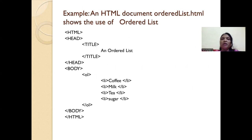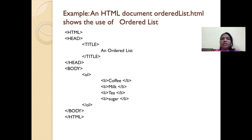Here is one sample. I have taken a list of items — coffee, milk, tea, and sugar — four items which I have to display as a list. I am going to use ordered list. In this case, by default, it will take the numbering as 1, 2, 3. Whenever you want to create a list, you have to give the ordered list tag inside the body tag. This is the structure of the HTML.